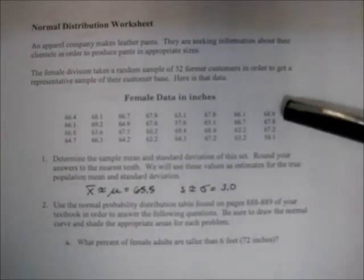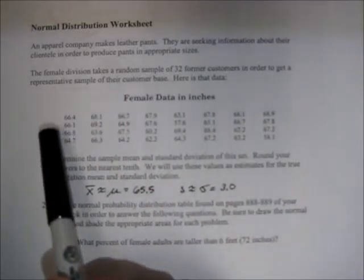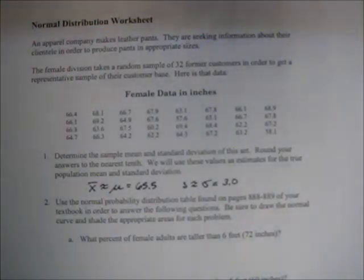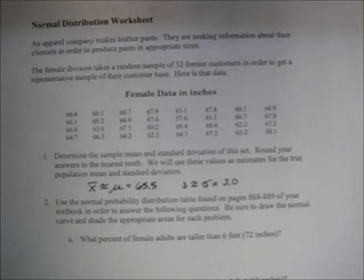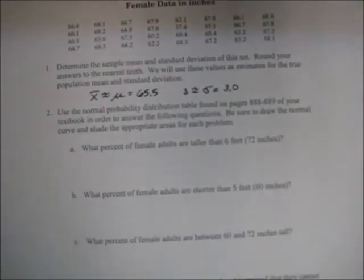We are finding the sample mean because we have a random sample of data here — it ends up being 65.5 inches — and this is the sample standard deviation, rounded to one decimal place: 3.0. We are going to use the sample mean and sample standard deviation as approximations for the true population mean and population standard deviation, mu and sigma. Surveying every single customer is not practical, so we assume these 32 former customers are representative of the majority of customers.